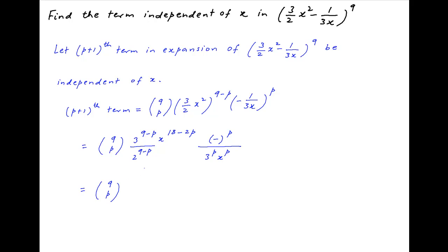This simplifies to 9 choose p times 3 raised to the power (9 − 2p), divided by 2 raised to the power (9 − p), multiplied by (−1) raised to the power p, multiplied by x raised to the power (18 − 3p).